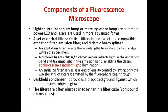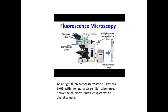Then comes the dark field condenser, which provides a black background to the image, because of which only the fluorescence is visible. Only those objects stained with the fluorescent dye will give a certain glow and can be viewed because of the particular excitation filter used. The filters are often plugged in together in a filter cube in the compound microscope, and they can be adjusted or replaced according to the requirement.